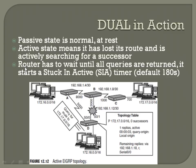A router has to wait until all queries are returned. It starts a stuck-in-active (SIA) timer with a default of 180 seconds. Normally it gets queries back very quickly, but in the event something isn't replying, the timer can last up to 180 seconds. Using the same network as before — since this was not considered a feasible successor, it wasn't added to the topology table. When this link goes down, it runs the query and eventually realizes this is the only route, so it routes traffic over here even though it was not a feasible successor.